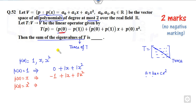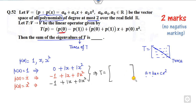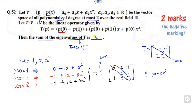For the third basis element p(x) = x²: p(0) = 0, minus 1 plus p(0) = 0 plus p(1) = 1 gives x, and 0 for x². From these results we define the matrix T as: first column (1, 0, 0), second column (minus 1, 1, 0), third column (minus 1, 1, 1). The trace of this matrix — the sum of diagonal entries 1 + 1 + 1 — gives 1 as the sum of eigenvalues. That is the right answer.